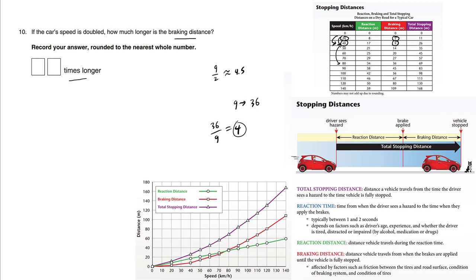Suppose we go from 50 kilometers an hour all the way to 100. What do we get? We go from 14 braking distance to 56. What is 56 divided by 14? The answer is 4. So looking at all this information, we're going to say 4 times longer.